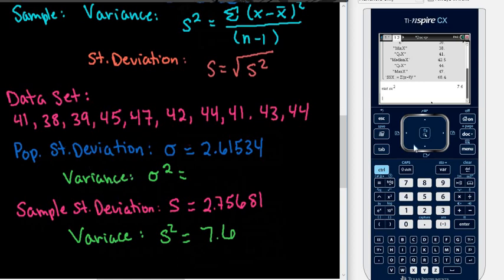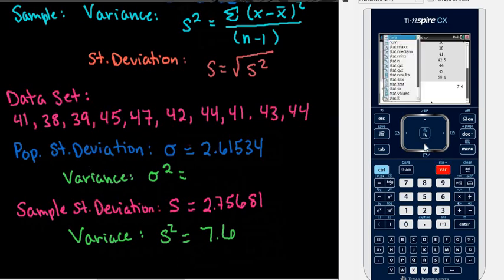If we're looking for the population variance, we would do the same thing except this time, we would find the stat with the sigma x and we would square that one. And that gives us 6.84.